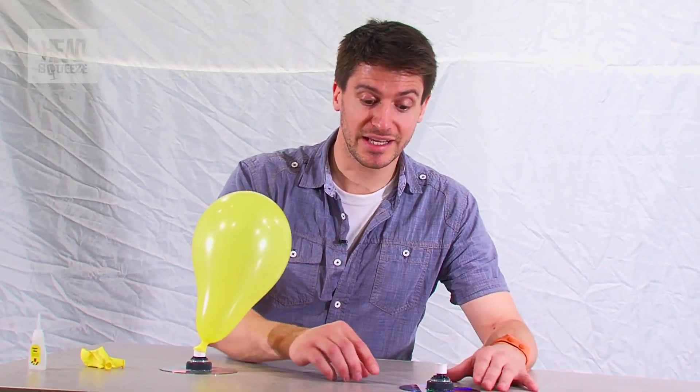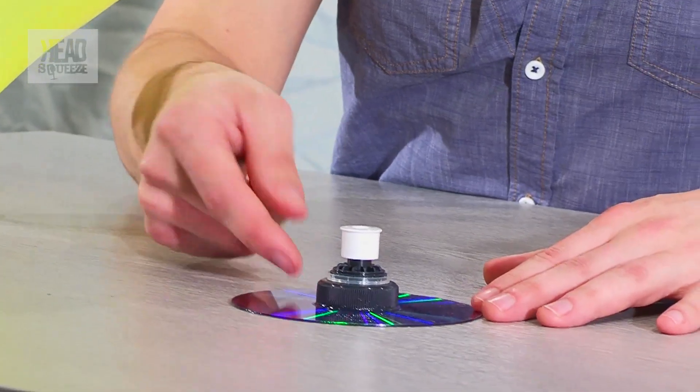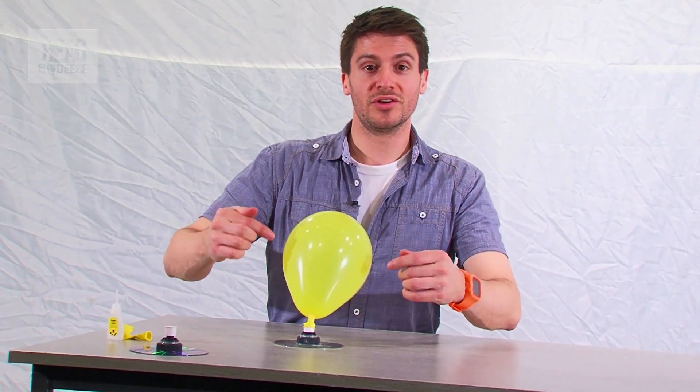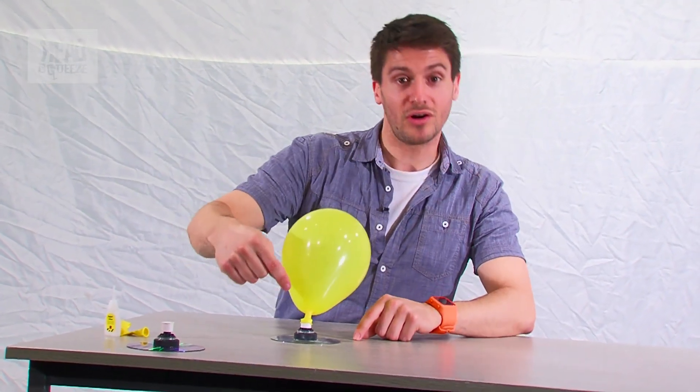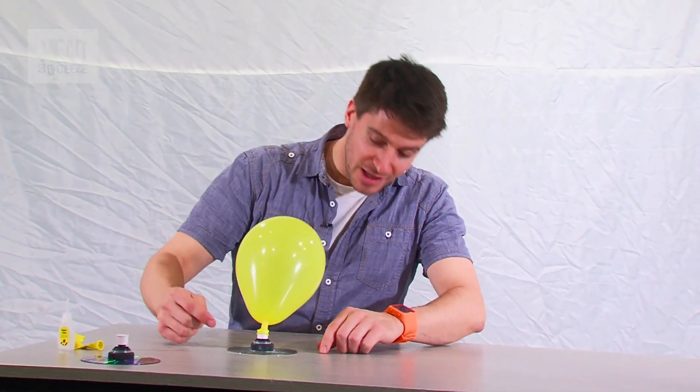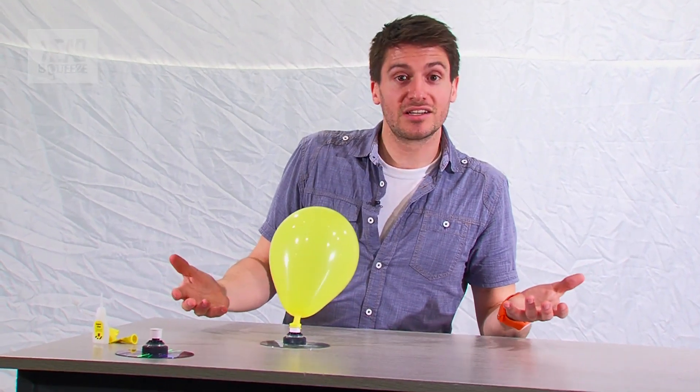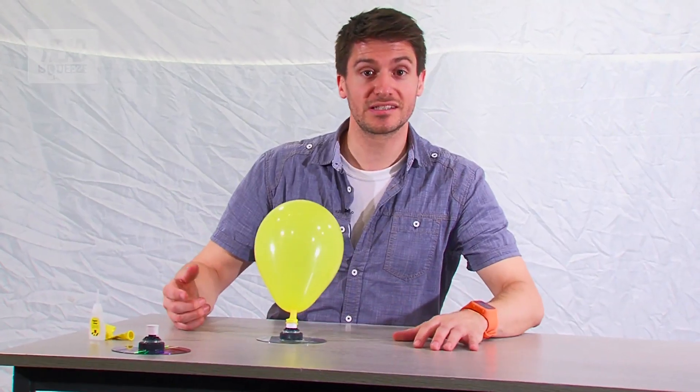That's friction that's slowing that down, and that's the friction between the bottom surface of the CD and the tabletop. When we open up the valve, the air from the balloon is forced out through the hole in the middle of the CD, and as we keep pushing more and more air under it there's only one place for that air to go and that's out around the perimeter of the CD itself.